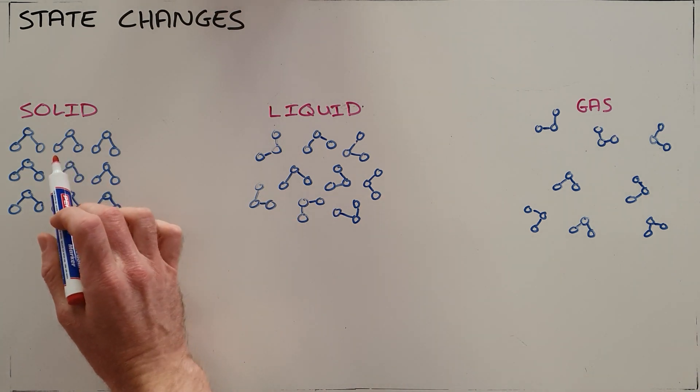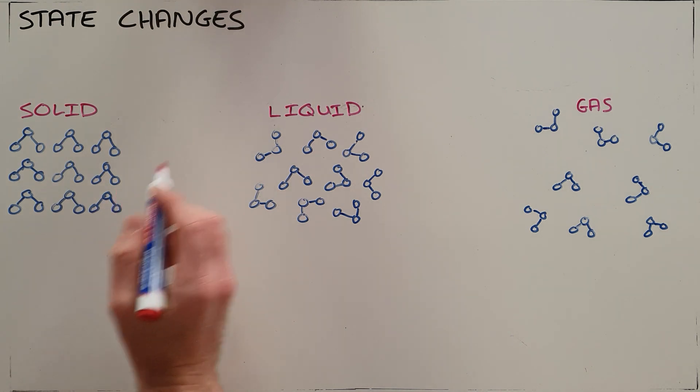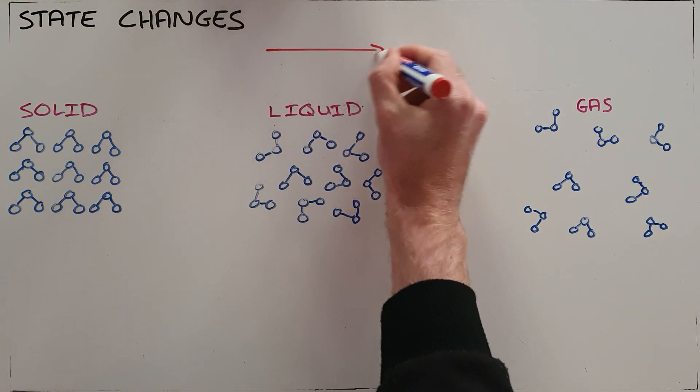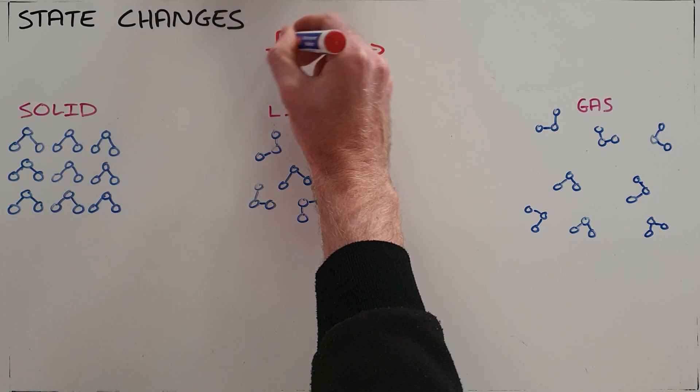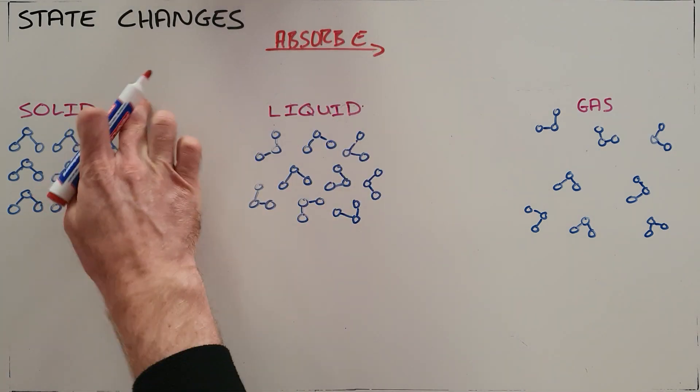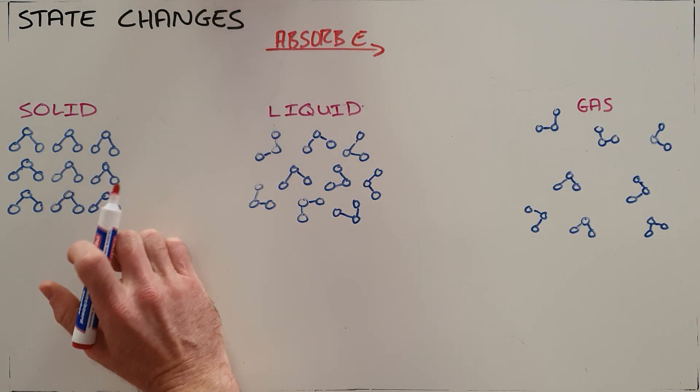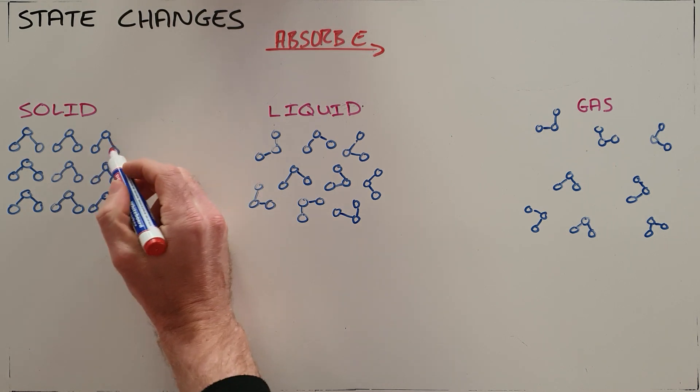We also know that it is possible to change state by absorbing energy. So as the amount of energy increases or as they absorb energy, substances will go from the solid state to liquid state to the gaseous state. And the way that happens is those molecules absorb enough energy to be able to break the forces of attraction that exist between those molecules.